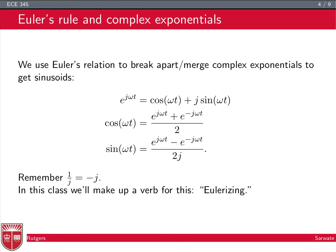So a handy dandy tool is Euler's relation. We use this to break apart or merge complex exponentials to get sinusoids. We combine sinusoids to get a complex exponential like e to the j omega t is cosine omega t plus j sine omega t. That's Euler's formula, one form of it. And we can also break apart cosines into complex exponentials by taking e to the j omega t plus e to the minus j omega t and then dividing by two. And for the sine function, we have the same two terms, only there's a minus sign here, and we divide by two j.